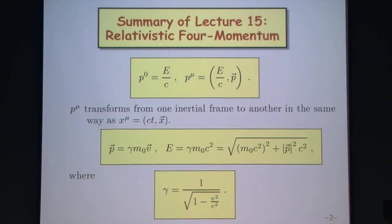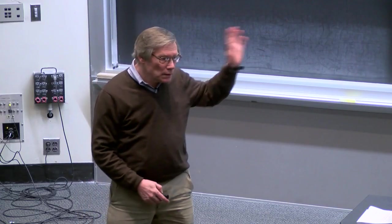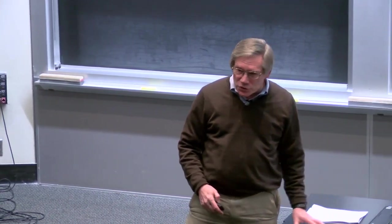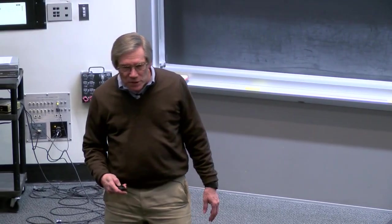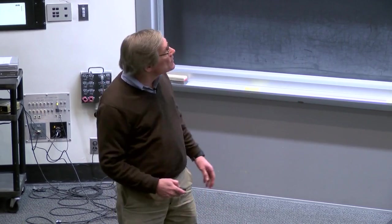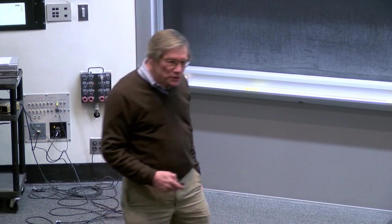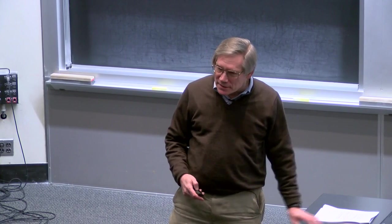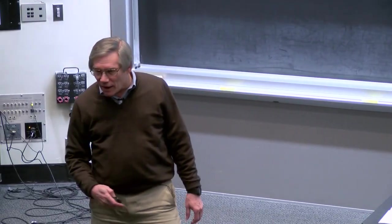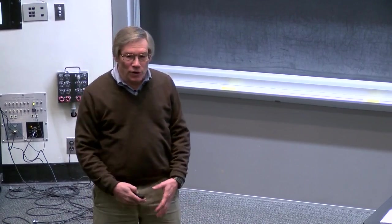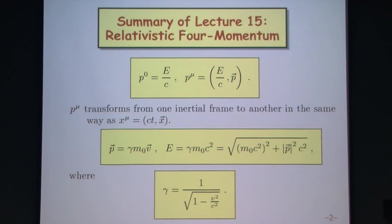We went on to talk about the relativistic definitions of energy and momentum and how they come together to form a Lorentz four-vector. The underlying theme is that we consider ourselves users of special relativity. For those who have taken special relativity courses, this was a review. For those who have not, no need to panic — I intend to tell you every fact you need to know. It's useful to recognize that energy and momentum form a four-vector, where the zeroth component is the energy divided by the speed of light.